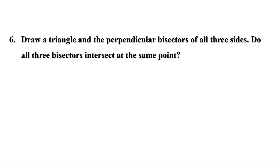Let us do the remaining problems of page 30. Draw a triangle and the perpendicular bisectors of all three sides. Do all three bisectors intersect at the same point? First, let us draw a triangle — let it be triangle ABC.